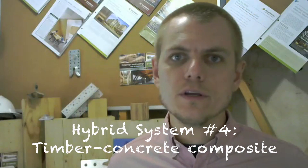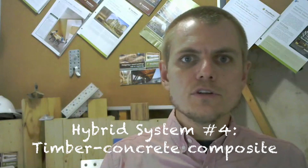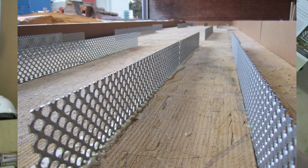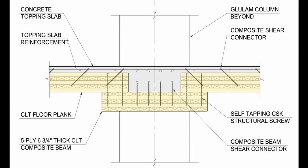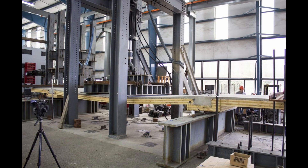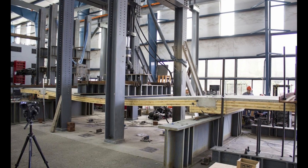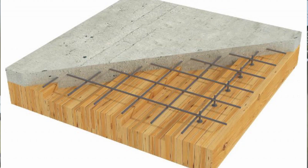Number four: timber concrete composite. In this system you're using a mass timber floor panel compositely connected with a concrete topping slab using some type of shear transfer mechanism. This could be screws, plates with headed studs, mesh, or proprietary plates — many different options for creating this composite action. As the panel goes into bending, the timber on the bottom goes into tension and the concrete on the top goes into compression, getting the best of both worlds in terms of material capabilities.